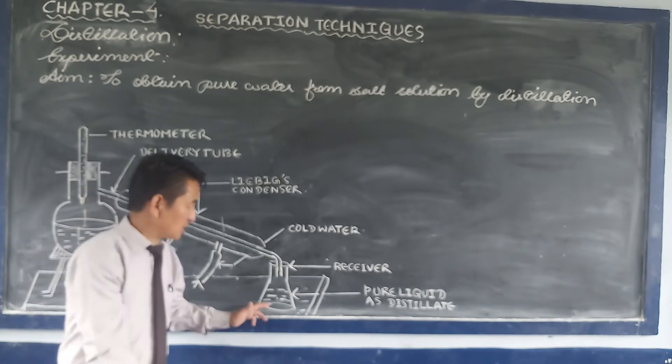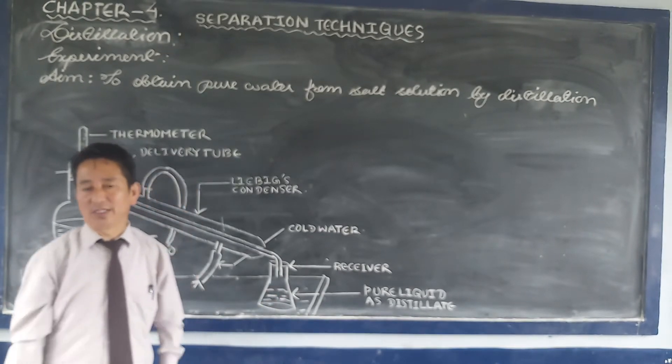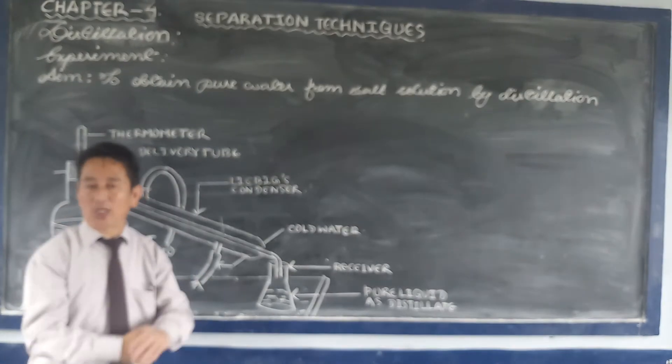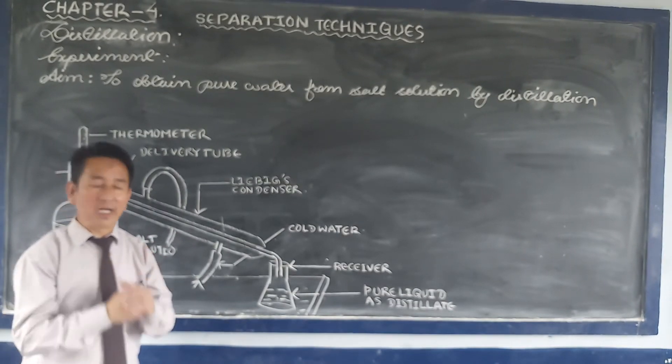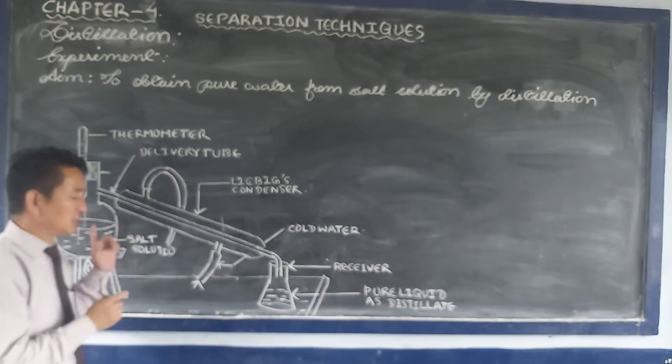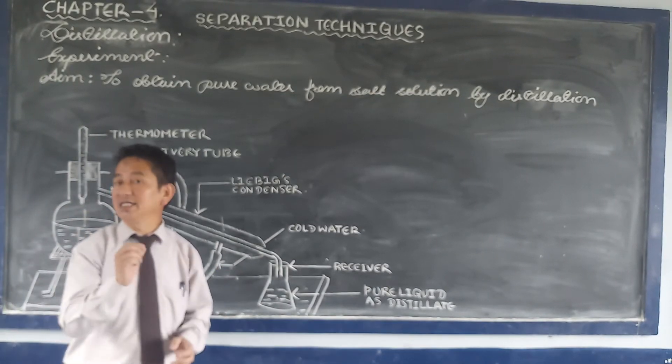This liquid is collected in a receiver and is known as distillate. Distillate means clean liquid. A clean, pure liquid obtained after distillation is known as distillate.